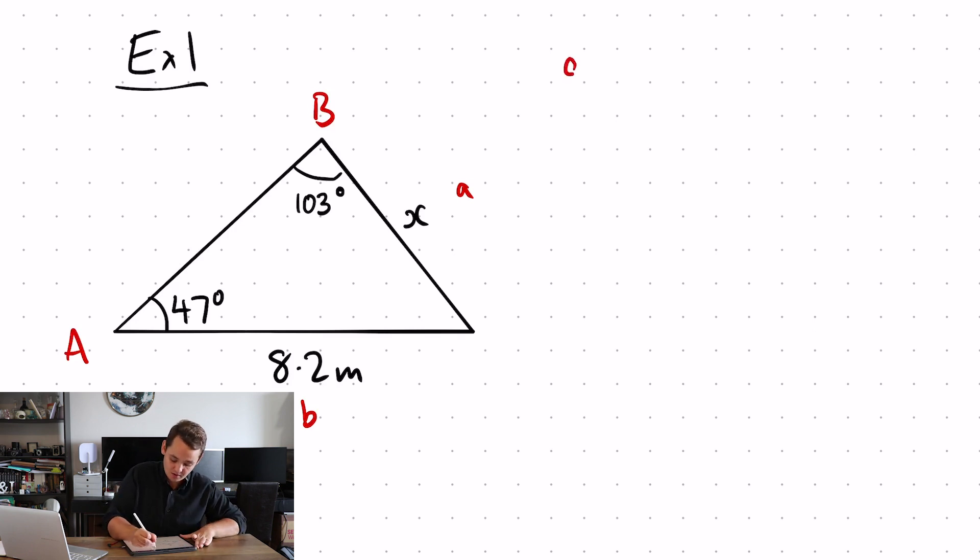Using my formula a over sine A equals b over sine B. It's just a case of simple substitution. So A is x, capital A is 47, lowercase B is 8.2, capital B is 103.